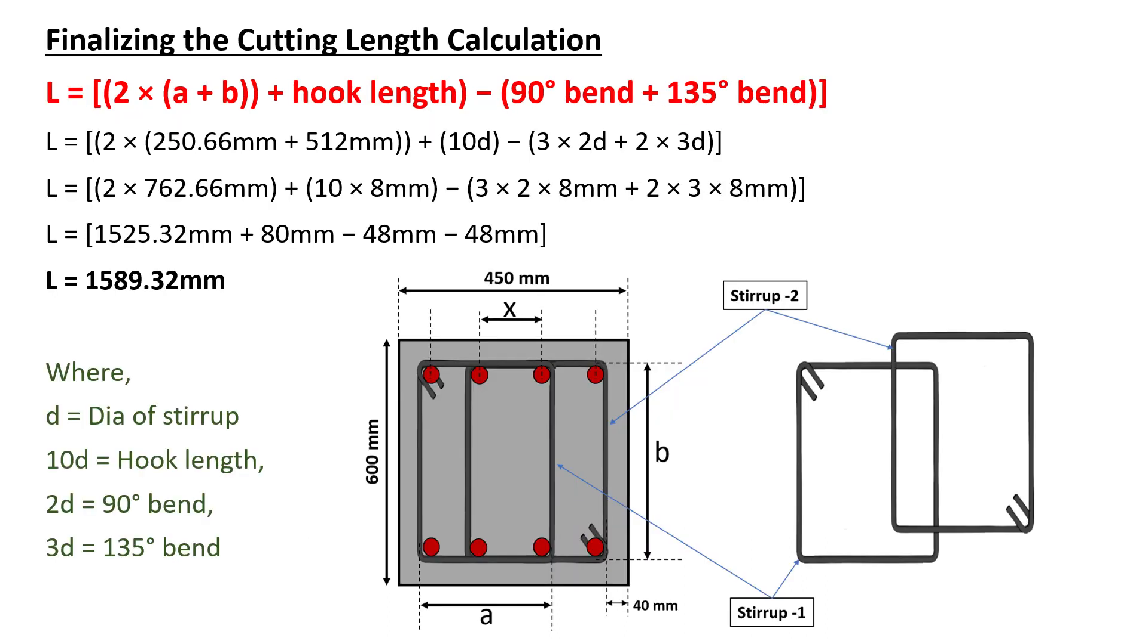Now let's finalize the cutting length calculation. The ultimate calculation of the cutting length L for stirrup 2 is composed of various components. L is given by twice A plus B plus hook length minus 90 degree bend plus 135 degree bend. Substituting the values of A, B, the provided hook length and bend angles, L will be equal to 1589.32 mm.